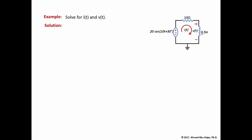When we solve for the circuit, the first thing we have to do is move to the phasor domain — from the time domain to the phasor domain. The reason we use the phasor domain is to simplify circuit analysis. In the time domain this circuit is modeled as a differential equation, which is tedious to solve using trig identities. We are interested in the current I(t) and the voltage across the inductor V(t).